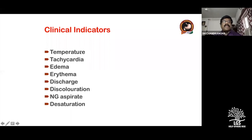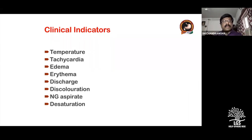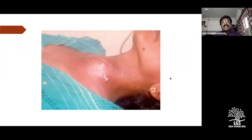To detect ischemia or necrosis clinically before investigations, these are the most important things you cannot miss in a patient who has undergone colon or gastric pull-up: systemic temperature and tachycardia — the surgeon will always think something is going wrong with the conduit. Locally you can see edema, erythema, and if it leaks there can be discharge. If you have an NG tube and there is a dark-colored aspirate, that means your conduit is not fine.